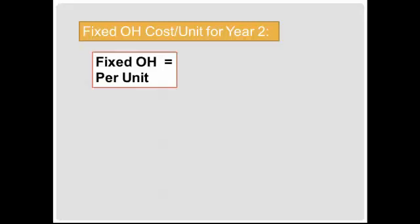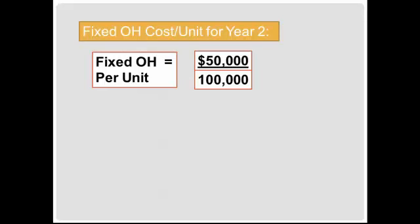Let's calculate the fixed overhead cost per unit for year two — which is also the same as year one. We take the $50,000 of total fixed overhead and divide by 100,000 units produced each year. Our fixed overhead per unit is equal to 50 cents per unit.